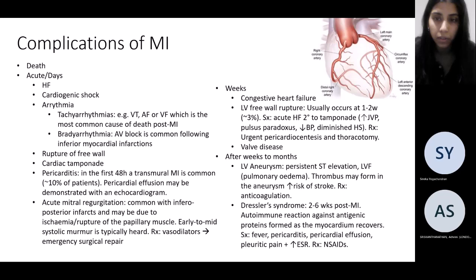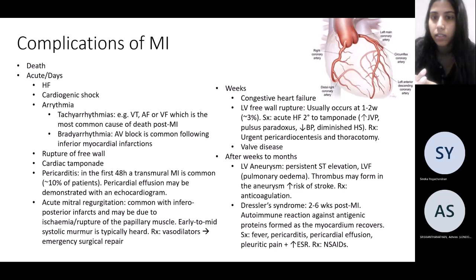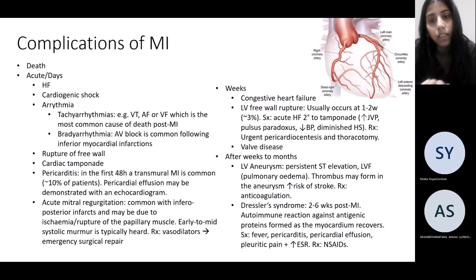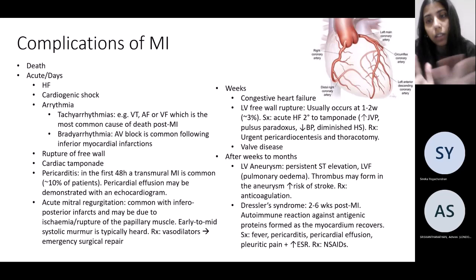Free wall rupture occurs in approximately 3% of patients and can cause acute heart failure secondary to tamponade. Tamponade signs: raised JVP, pulsus paradoxus, low blood pressure, and distant heart sounds. Treatment is pericardiocentesis. In weeks to months you can experience a ventricular aneurysm — this is where you have persistent ST changes despite having had intervention — and left ventricular failure.